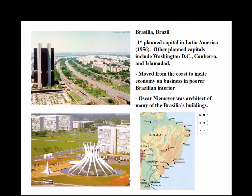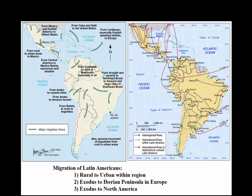We see planned cities such as Brasilia, which moved inland to serve as a capital and stimulate the economy. It was the first planned capital in Latin America in 1956. There are other planned capitals: Washington D.C. was a planned capital — it was in the middle of the country at the time. Canberra, Australia is an example of a planned capital, and Abuja, Nigeria is another. You can see the migration within Latin America — an exodus to the Iberian Peninsula and Europe, or to North America — a lot of inter- and intra-regional migration.